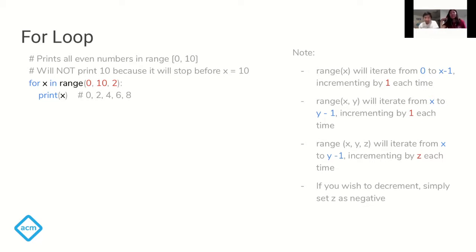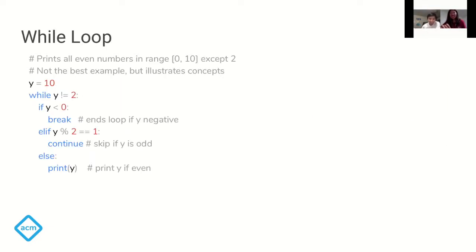Someone asked in the chat how to do nested for loops — you just indent. Every nested for loop needs its own additional indent level. Also, for nested loops, you need to make sure each level of indentation is consistent. Thanks for checking the chat.